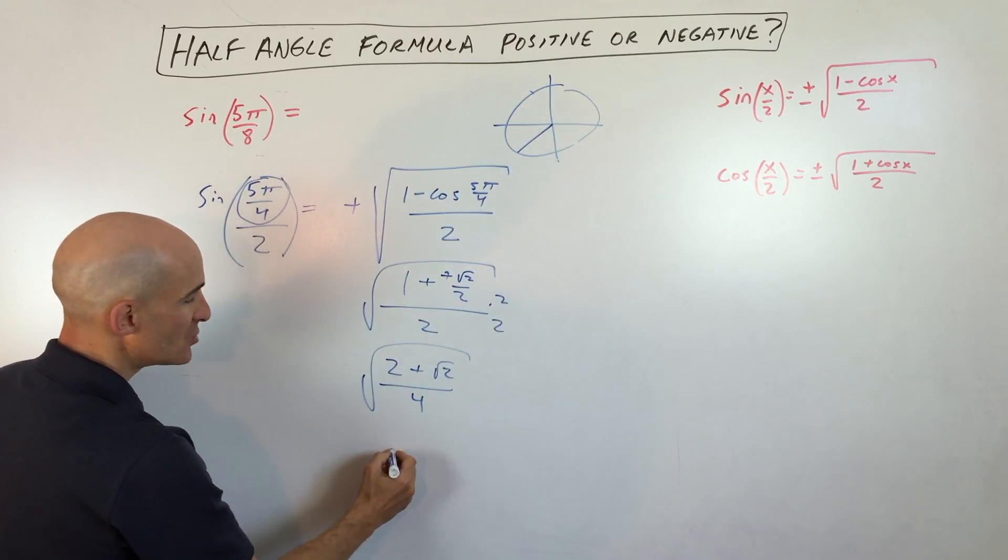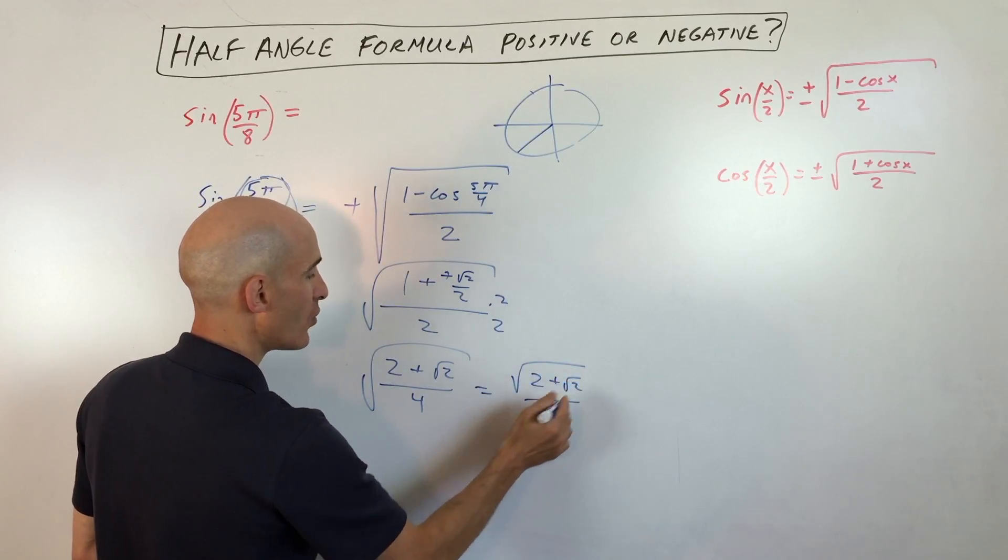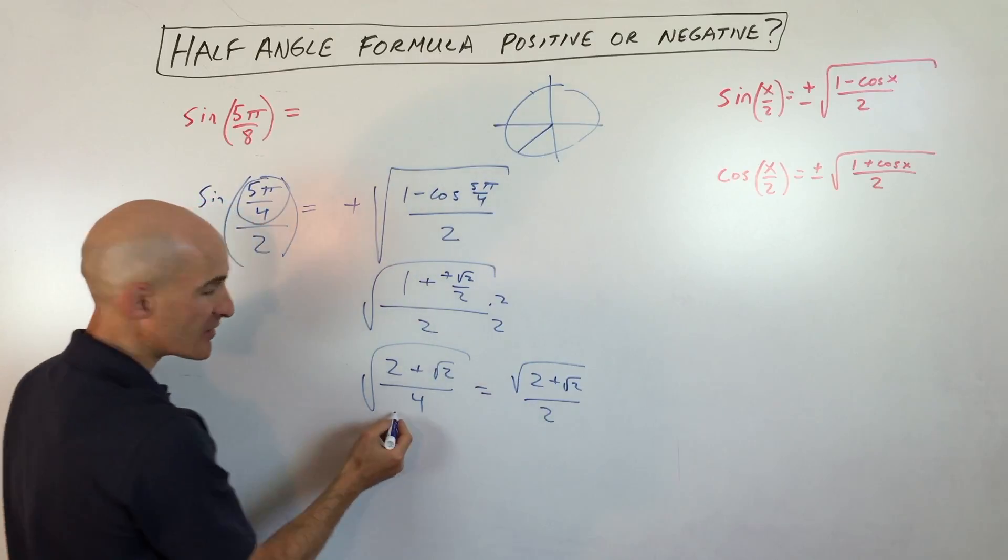The square root of 4, though, is 2, so I'm just going to write this as the square root of 2 plus square root of 2, all divided by 2. This 2 is no longer underneath the square root.